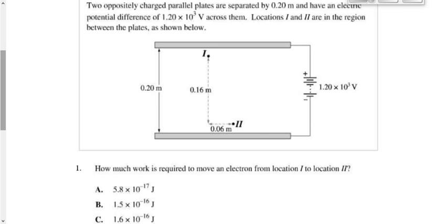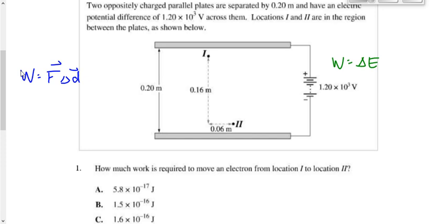This is a combination of a physics 20 and a physics 30 problem. We covered work back in physics 20 — work equals F times d, force times displacement. We also said work equals delta E, the change in energy, which is the work-energy theorem. We can use either one to solve this problem. We'll use F times d first.